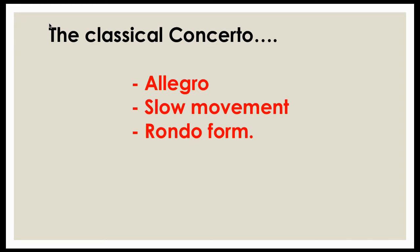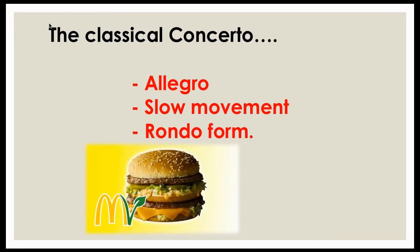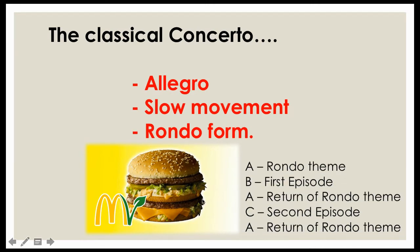The first movement is Allegro — it starts quickly. Then there's a contrasting slow movement, normally in a minor key. A rondo finishes it off. I normally use the idea of a Big Mac to explain rondo form — the extra layer of bread in the middle is like the rondo structure. The music starts with the A section, then we have the contrasting B section, then back to A, then a C section, and back to A again. So the structure is A, B, A, C, A — think of rondo form like a Big Mac.